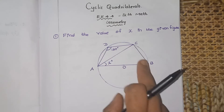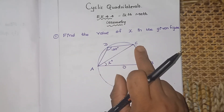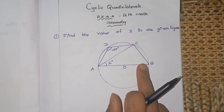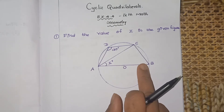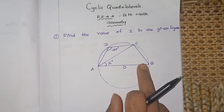ABCD is a cyclic quadrilateral. There are two important properties. B and D are opposite angles, and A and C are opposite angles. When you add these opposite angles, you get 180 degrees. So the very important property of a cyclic quadrilateral is: opposite angles of a cyclic quadrilateral are supplementary.